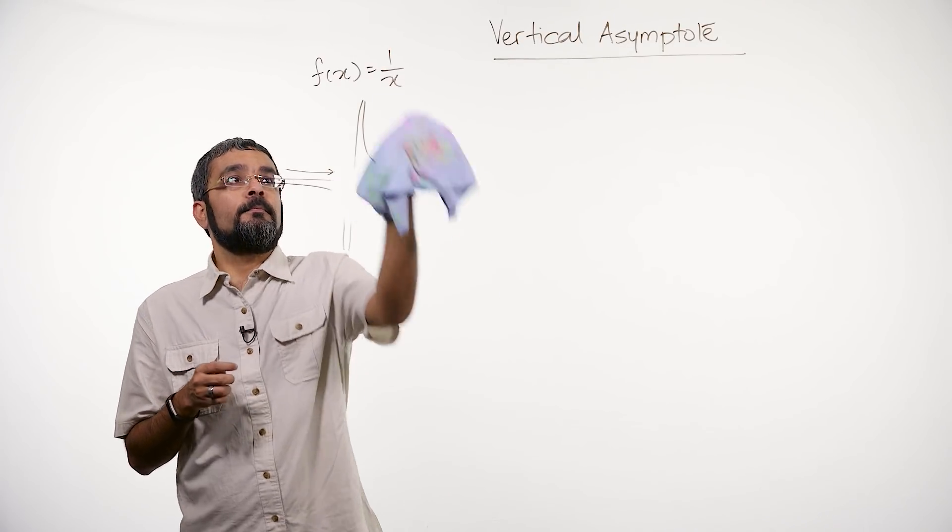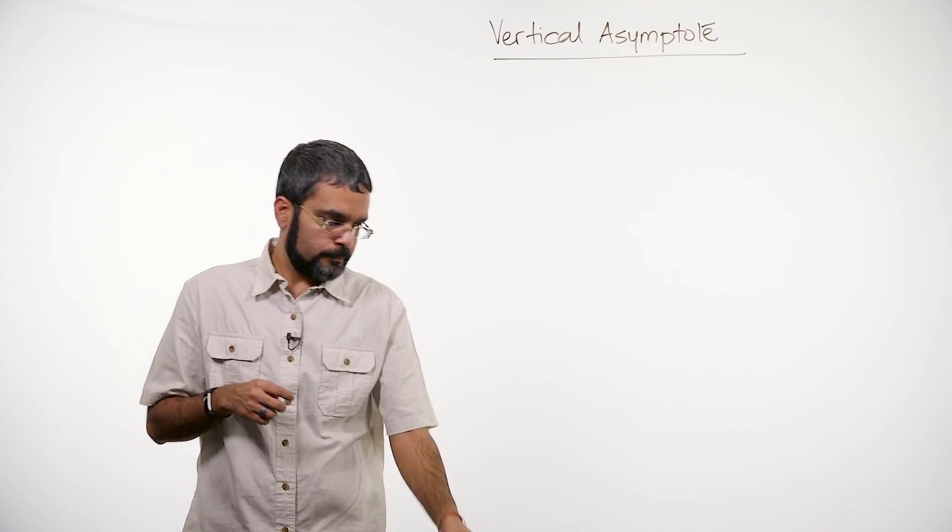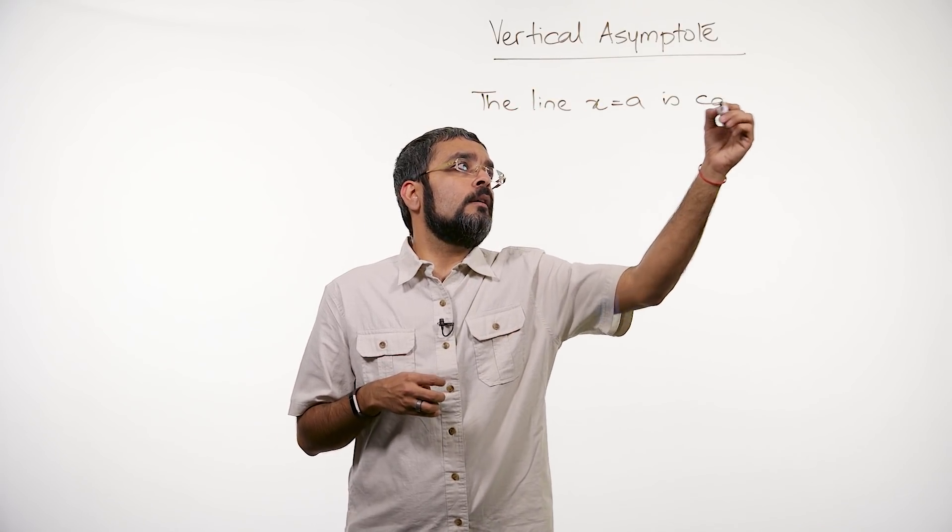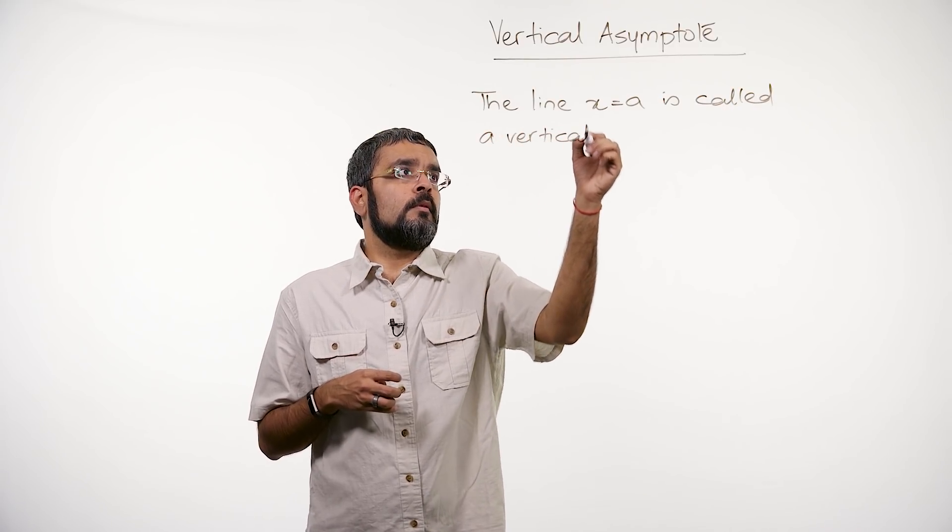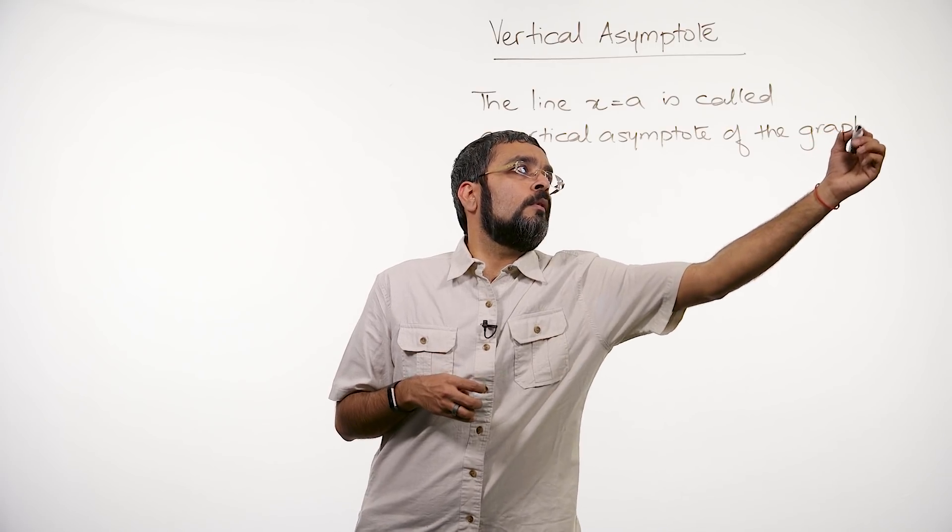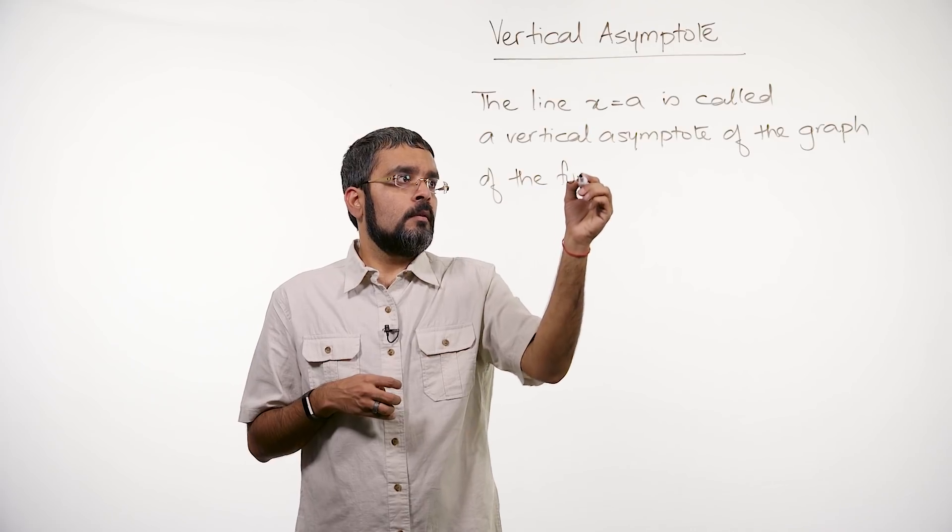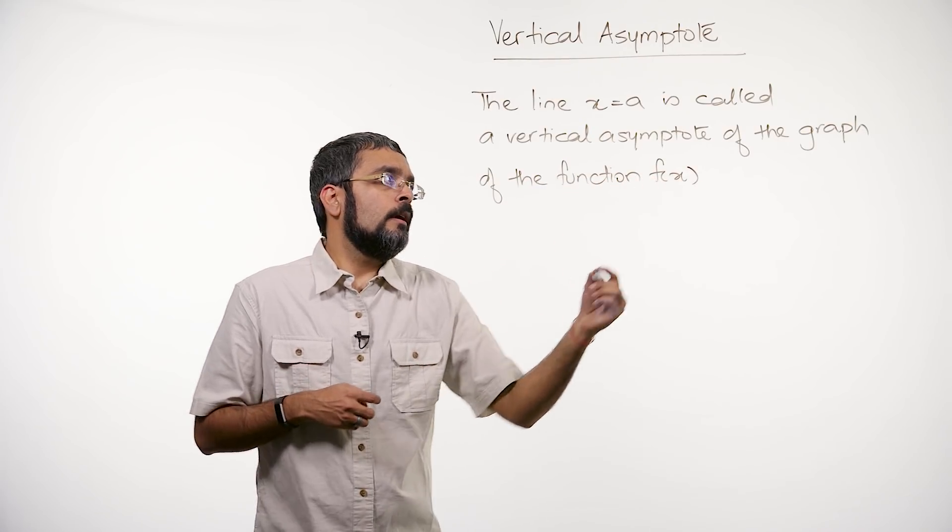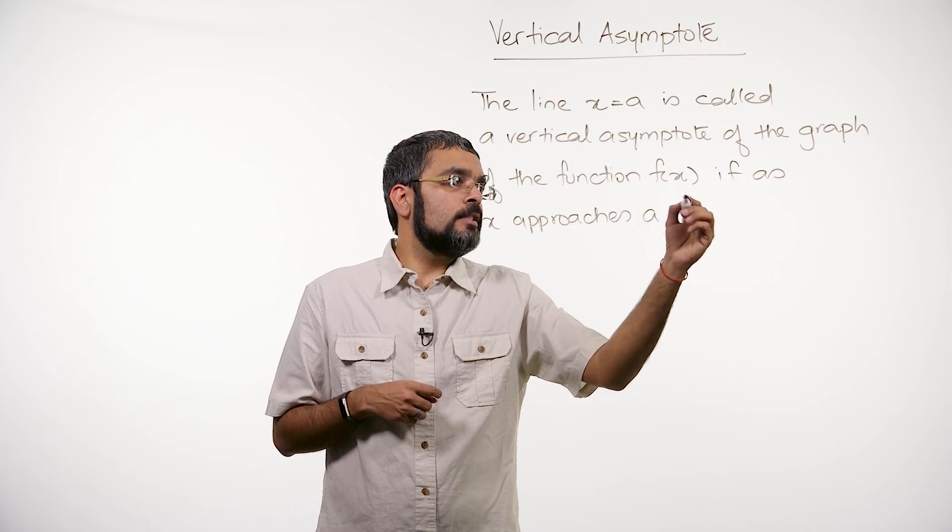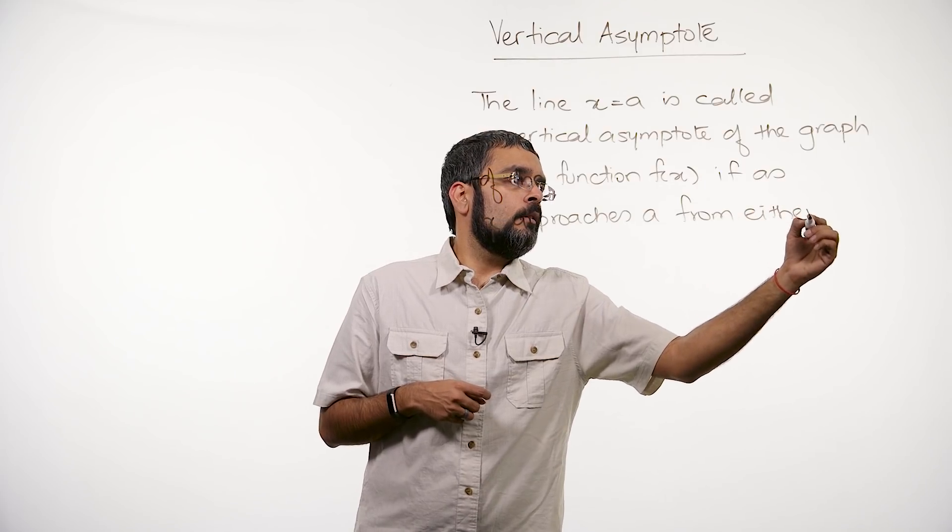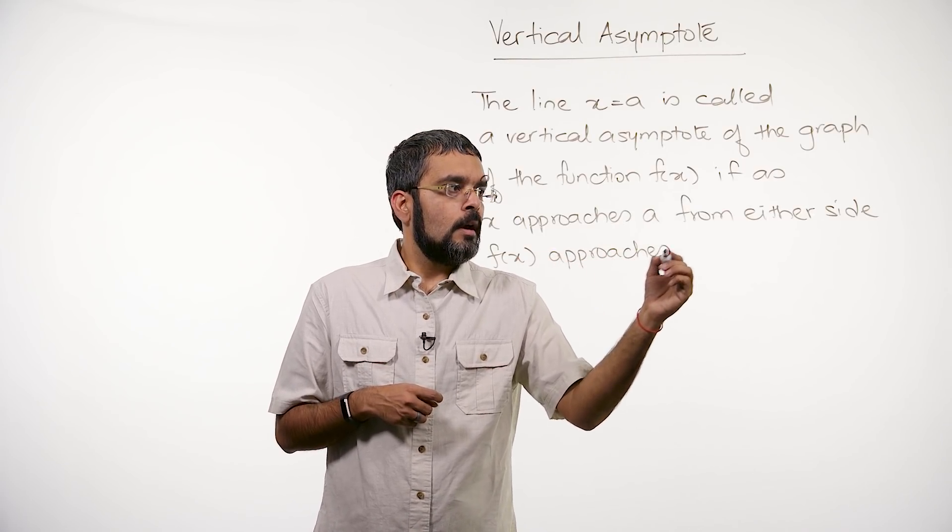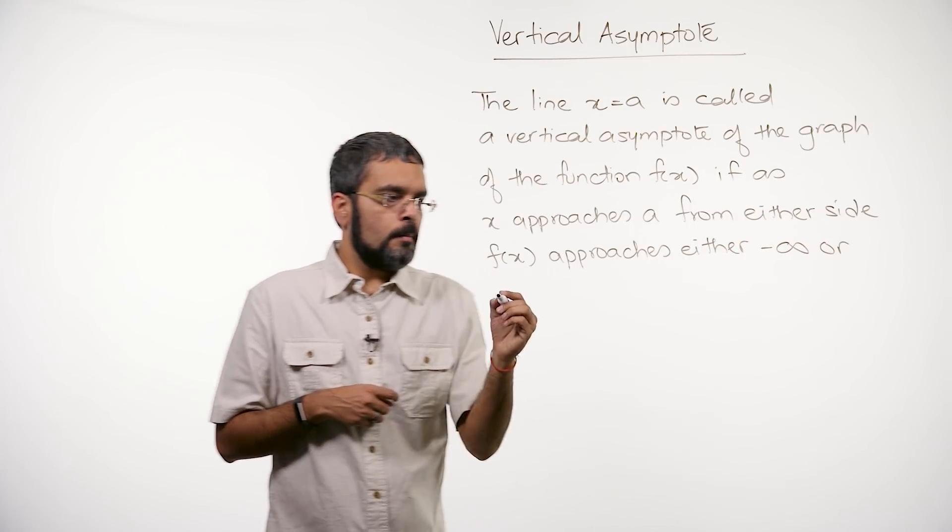So let's go ahead and see what a vertical asymptote means. The line x equals a is called a vertical asymptote of the graph of the function f(x), if as x approaches a from either side, f(x) approaches negative infinity or positive infinity.